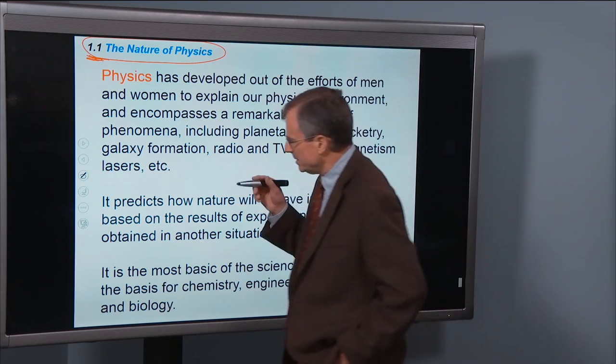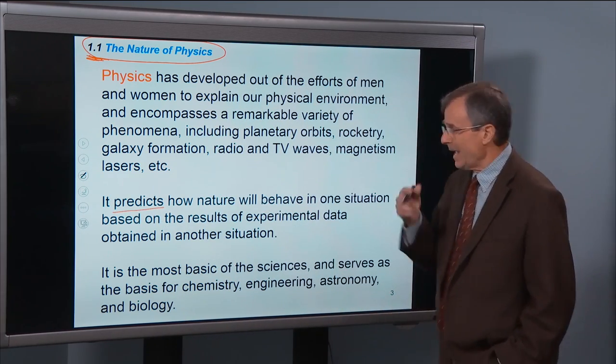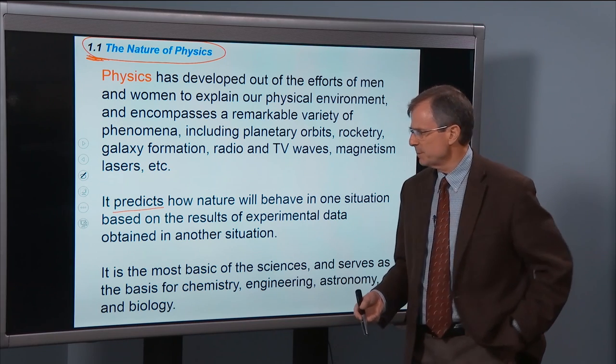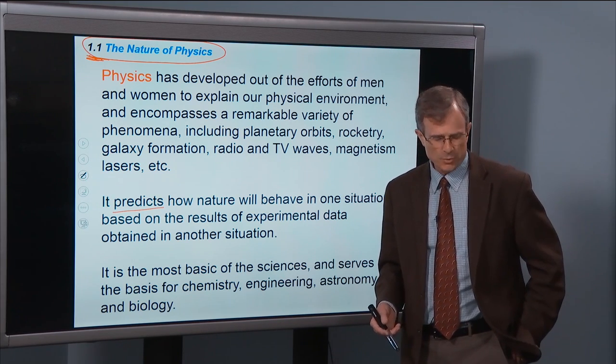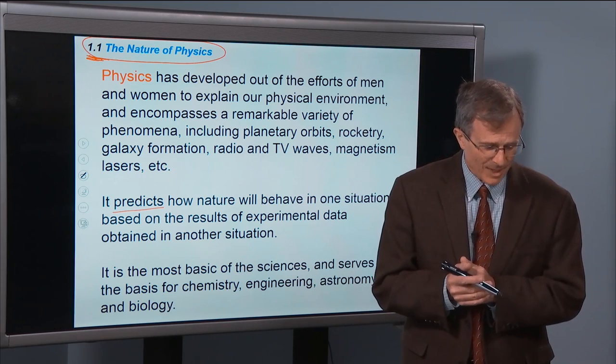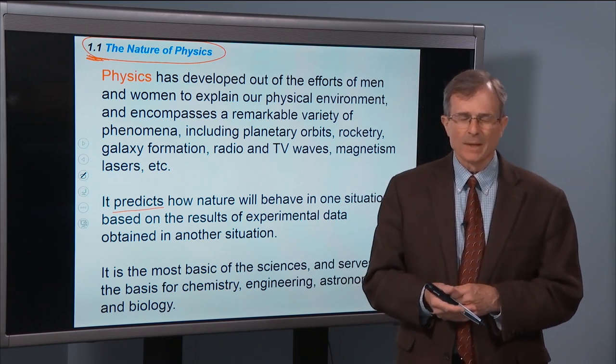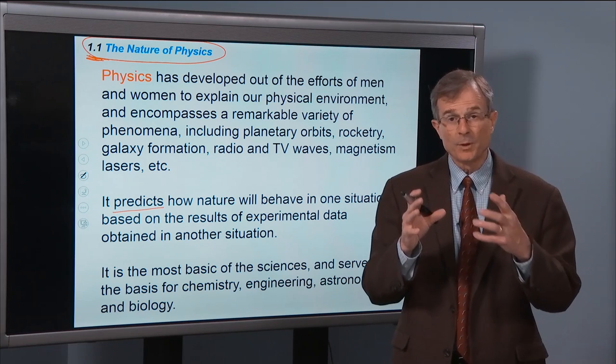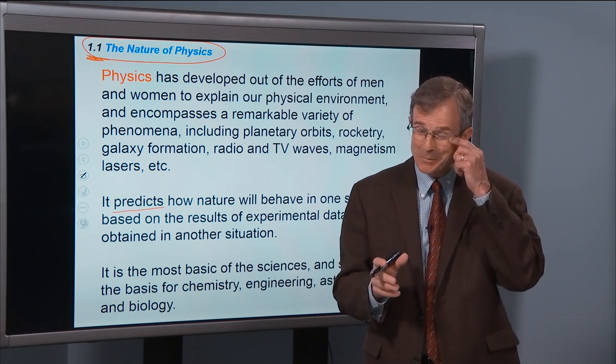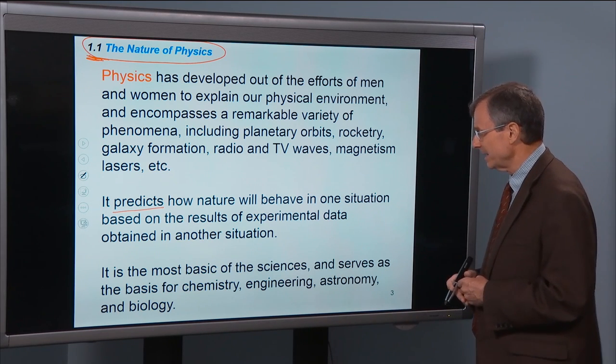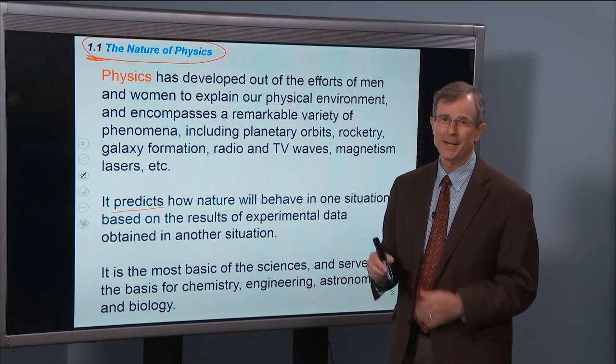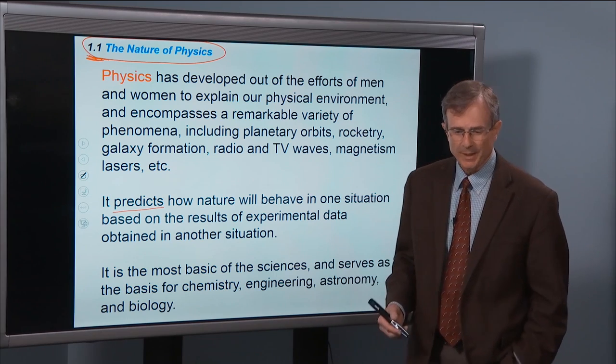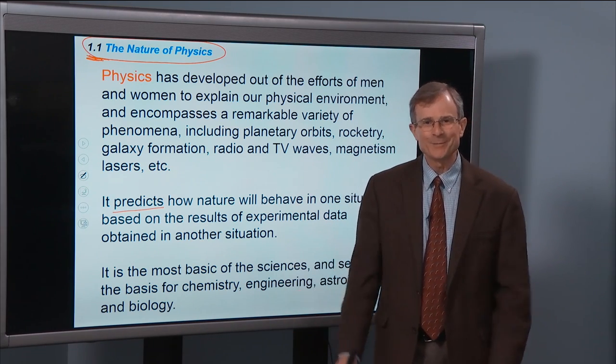So physics, the whole idea of physics is to predict how nature will behave in one situation based on the results of experimental data obtained in another situation. And as we'll see in the second semester, near the end of the second semester of the course, there are some situations in which the result of physics is random. It's really random. In quantum mechanics and in chaotic dynamics, you can't exactly tell what's going to happen at the end of the experiment because nature won't tell you. But most of this semester, A plus B equals C, and it will work every single time.